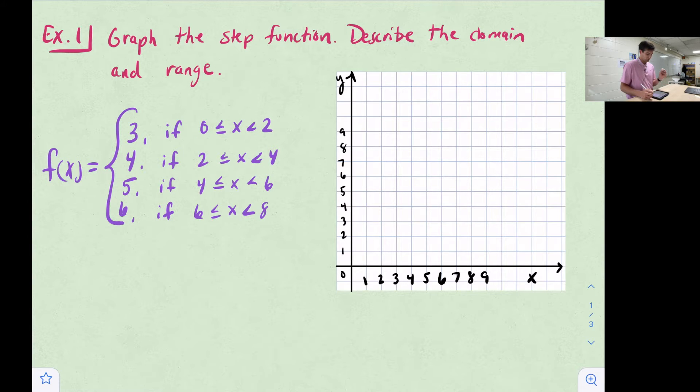The first piece, f of x equals three, if x is between zero and two. Notice our inequality symbols, it's an or equal to on zero. So we need to have a closed circle on zero and an open circle on two. This is when y is three, right? So we're going to put a closed circle here on three, and it goes all the way to two. At two, we have an open circle. Now we can just draw a line to connect those points. That's what that first step would look like.